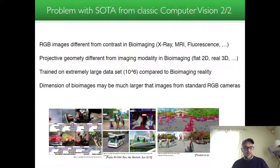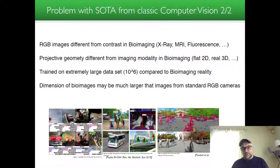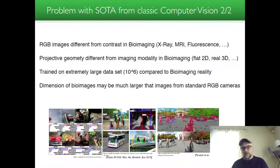Also, state-of-the-art methods have been trained on extremely large datasets — typically 10^6 instances, meaning one million images in the context of classification — which compared to bioimaging is quite hard to produce and not always achieved at the same scale of data.